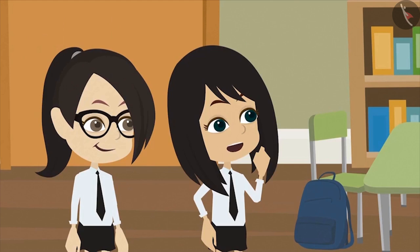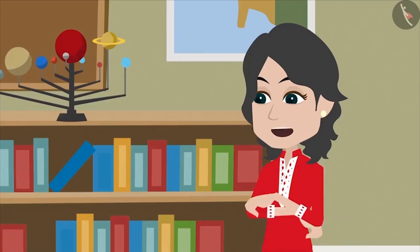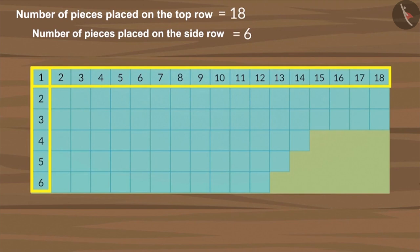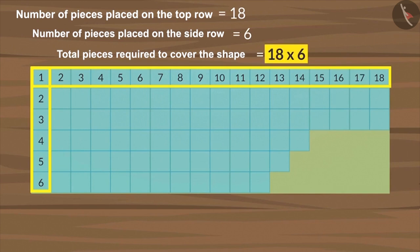Now, we will try to measure the desk. Yes. Go ahead. 18 pieces are placed on the top row of the desk and 6 on the side. So, we multiply them to identify how many pieces will be required to cover the entire desk. We get 108 on multiplying 6 by 18.